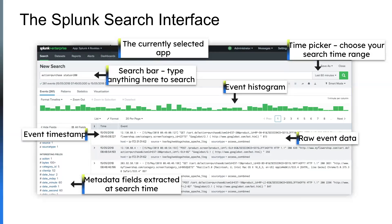We also have our search bar — this is where we tell Splunk which events to bring back. We ran the search of action equals purchase, status equals 200. This brings back all of the raw events for purchase events with a status code of 200. To the left of the events, we have a timestamp associated with each event. On the left-hand side, we have selected fields at the top, which by default is host, source, and source type. Then we have interesting fields, meaning at least 25% of the events returned had these fields as part of them. This goes back to the idea of schema-on-the-fly.